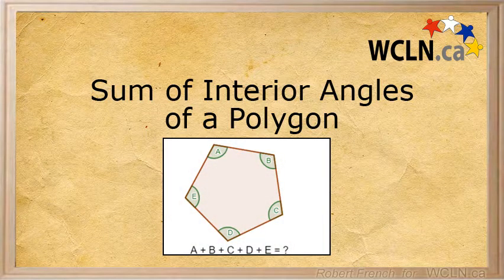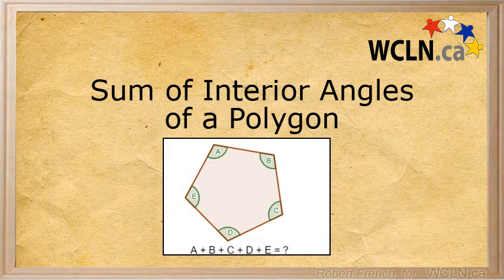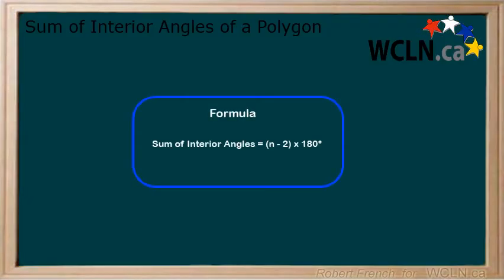In this tutorial, we will be learning about the sum of the interior angles of a polygon. We are going to start with the following formula for the sum of the interior angles of a polygon. There is only one variable, which is n. n represents the number of sides of a polygon.